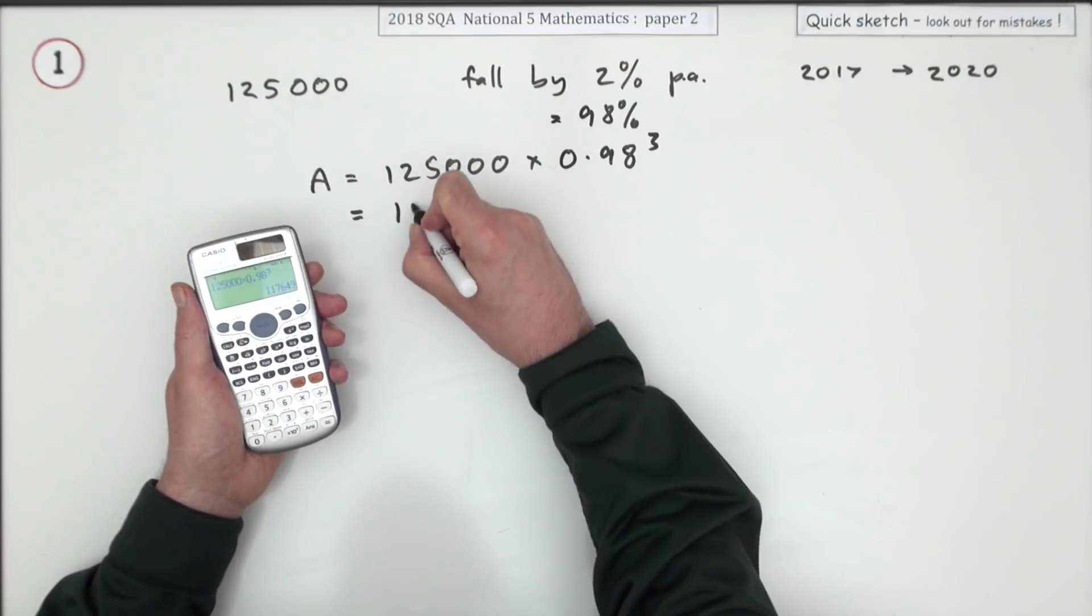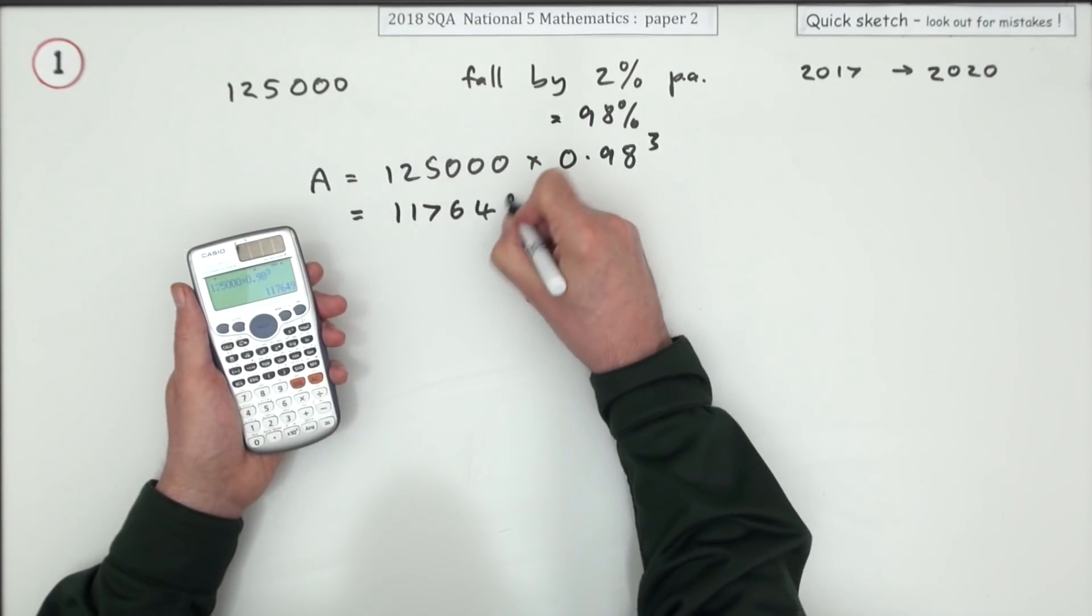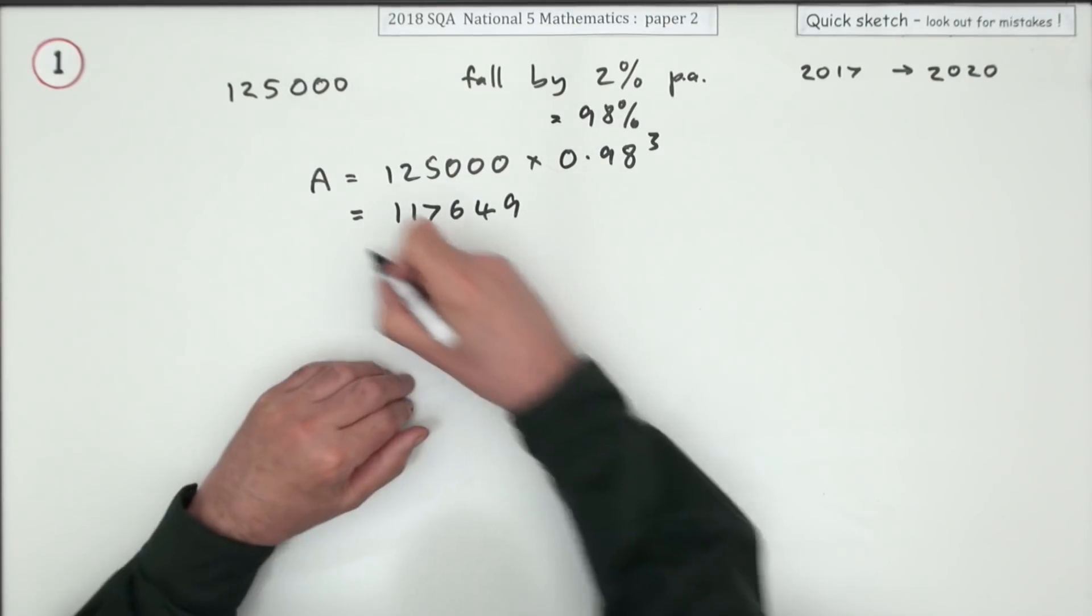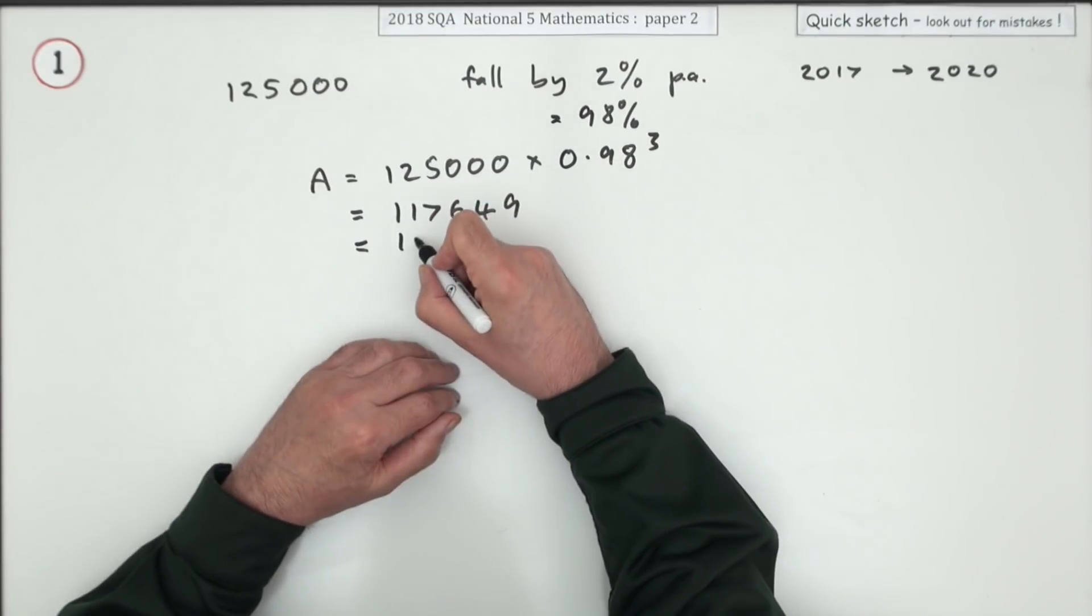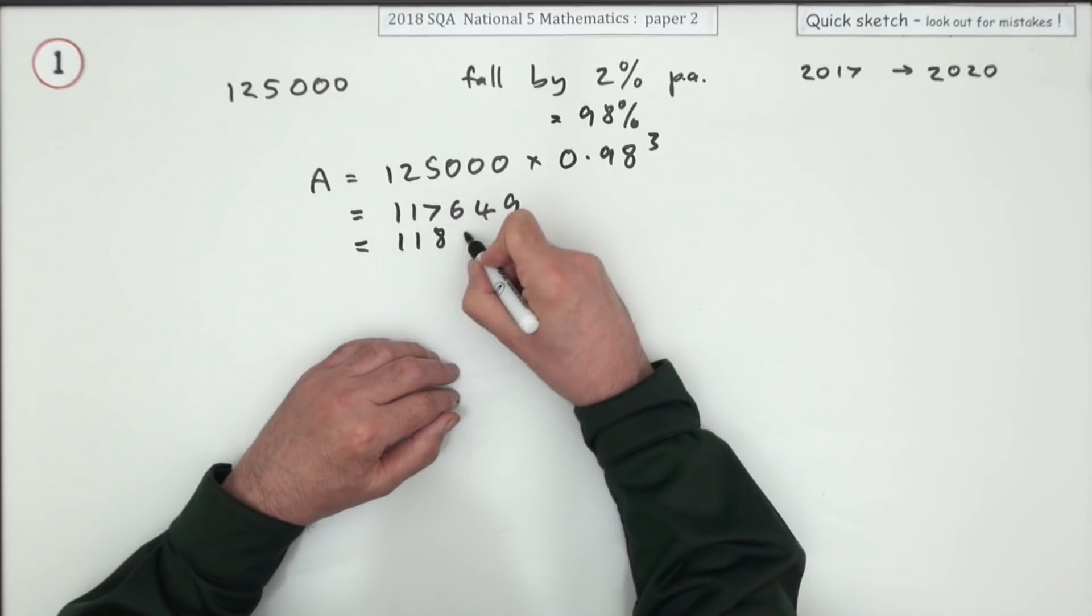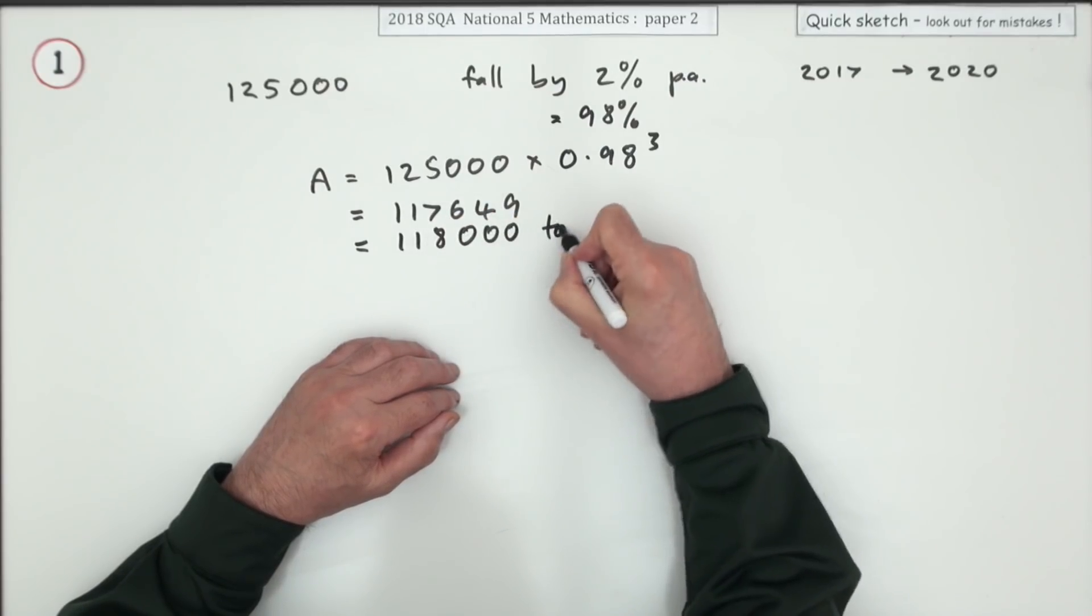And you get 117649. And you think round it off appropriately. That's to three figures. It doesn't say in the question about rounding it off. So I'll take it to 11800 tonnes.